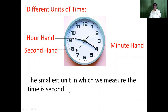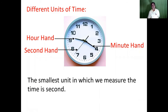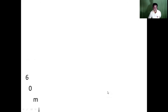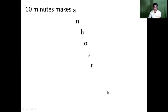When we take 60 such seconds, the minute hand will move by one small division on the clock, and this is known as one minute. So 60 seconds taken together makes a minute. When we take 60 such minutes together it's going to make an hour.